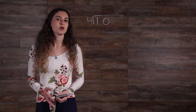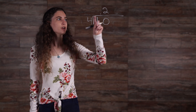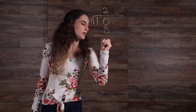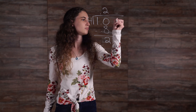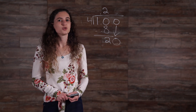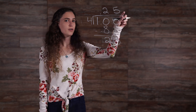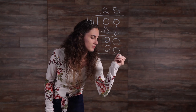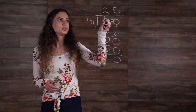Second, 4 ones will go into 10 tenths 2 tenths times. Third, 4 times 2 tenths is equal to 8 tenths. Fourth, 1 minus 8 tenths is equal to 2 tenths. Fifth, we're going to rewrite the original dividend as 100 hundredths and bring the new zero down. Sixth, 4 ones goes into 20 hundredths 5 hundredths times. Seventh, we multiply 4 times 5 hundredths to get 20 hundredths. Then we'll subtract to get zero. This means that 1 fourth is equal to 25 hundredths.